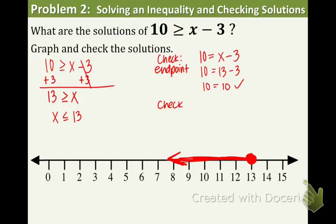Now let's check the symbol. That less than or equal to symbol—we need to choose a number that's smaller than 13. So how about let's choose 12. We're using the inequality from above. Is 10 greater than or equal to 9? Yes. So the symbol works, the endpoint works, and we're all good to go to the next problem. This is correct.